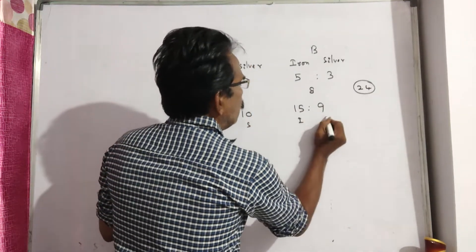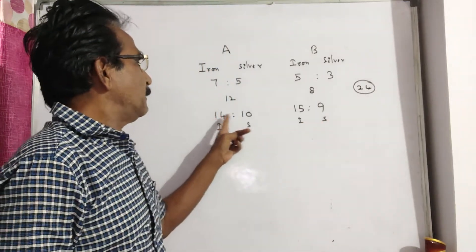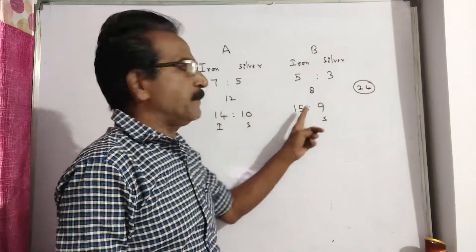So this is 14 plus 10, 24. This is 15 plus 9, 24.